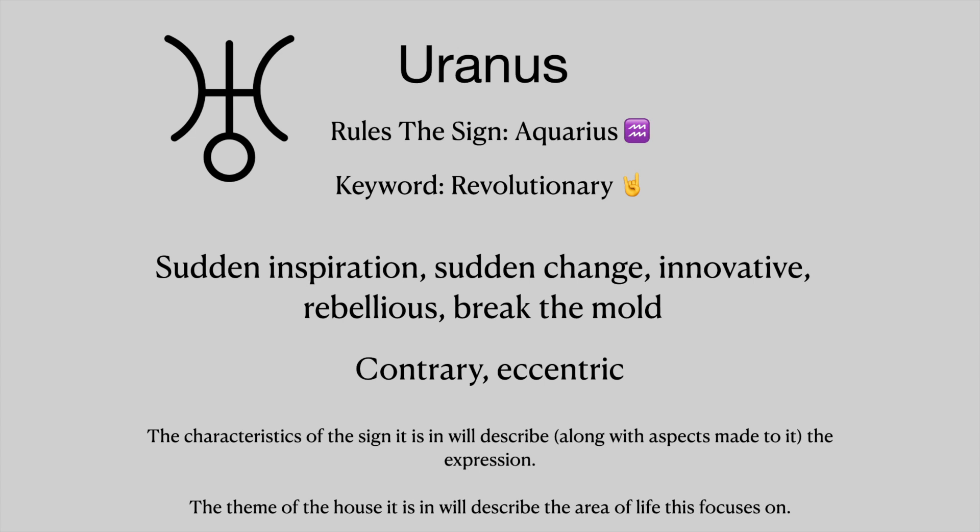Uranus rules the sign of Aquarius and the keyword is revolutionary. This describes where we experience sudden inspiration and sudden change, where we feel the need to be innovative and rebellious and break the mold. The energy of this planet is contrary and eccentric.